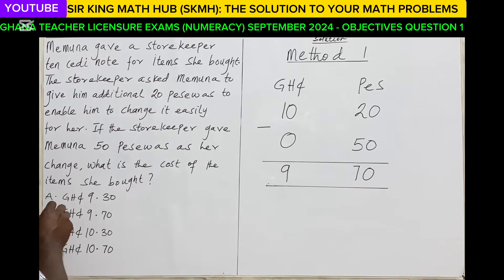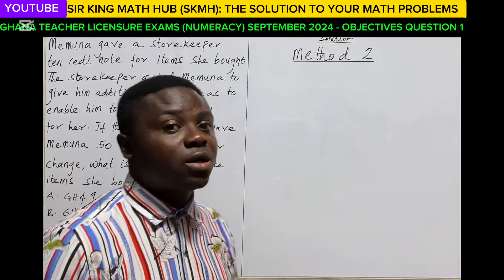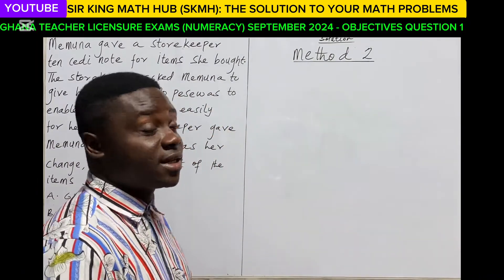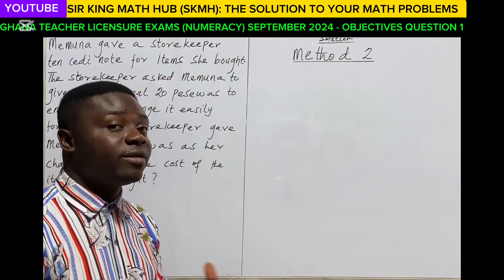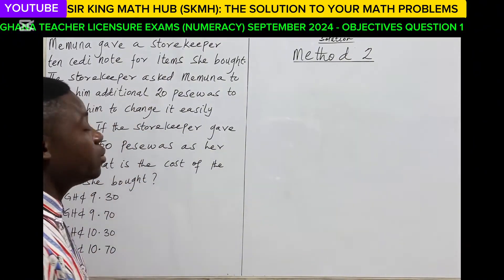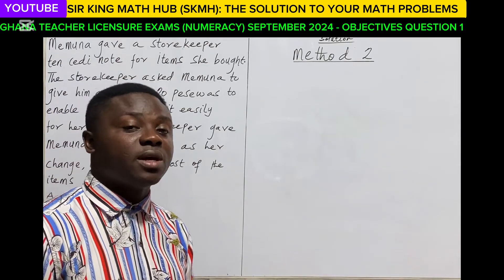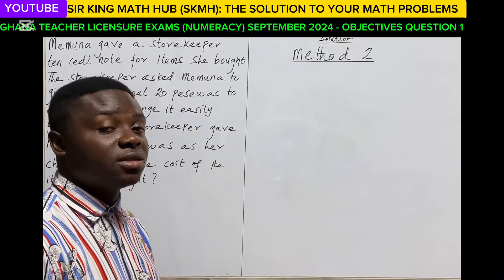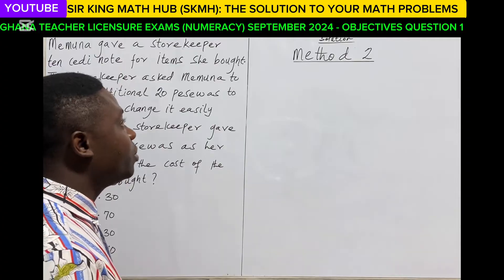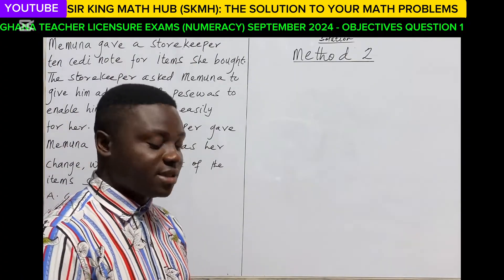The right answer is option B. We can also use a second method, which is a fast way of solving this question. Memuna gave the shopkeeper 10 cedis and 20 pesewas. We can represent 10 cedis and 20 pesewas using the decimal system.